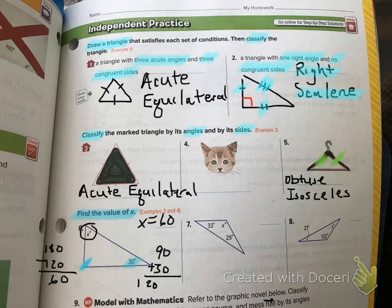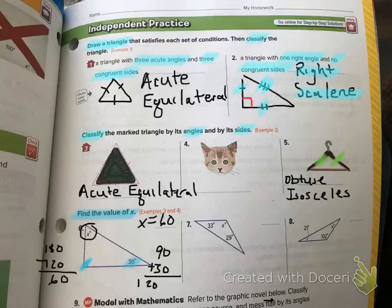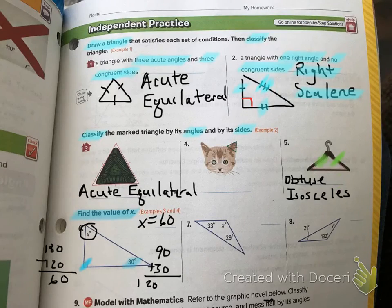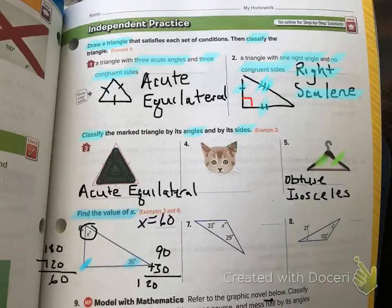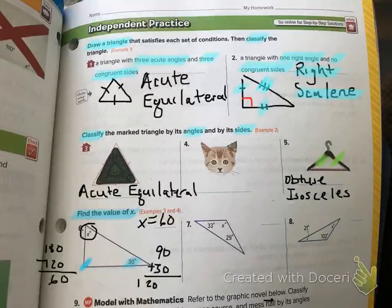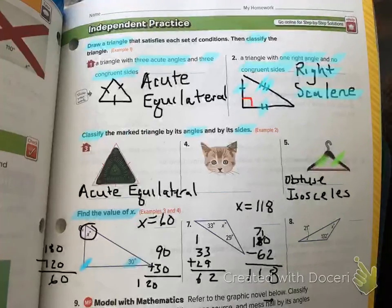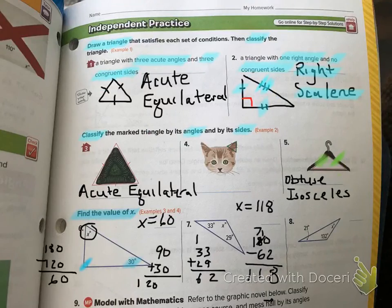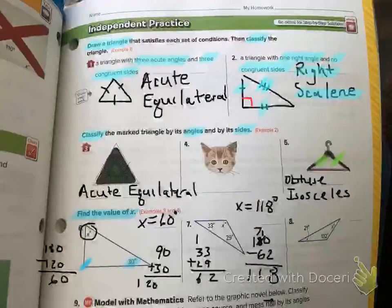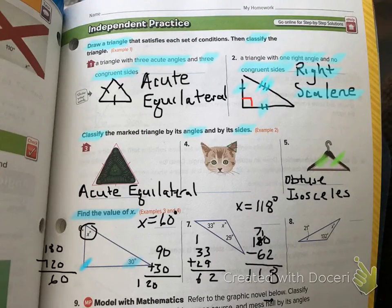Okay. For this next one, I want you to pause the video and try number seven on your own. Remember that x plus 33 degrees plus 29 degrees has to equal 180 degrees. Okay. So, the answer for number seven, I hope all of you found x to equal 118 degrees. I'm going to put my degrees sign back on there. We have to include our label as well.